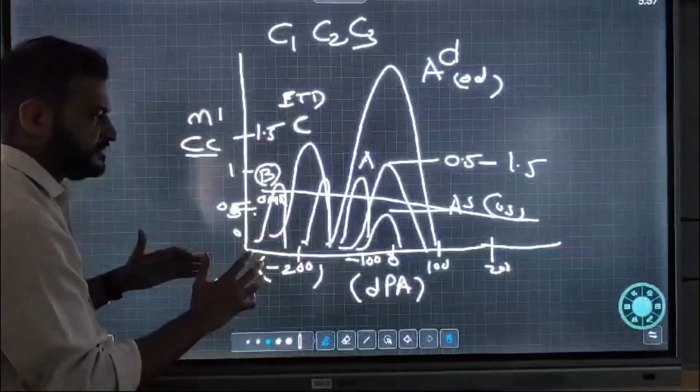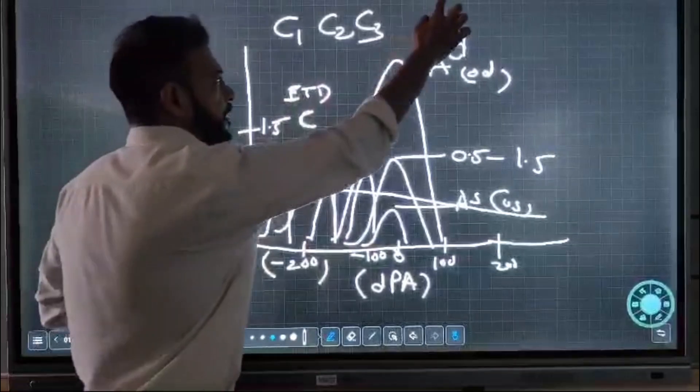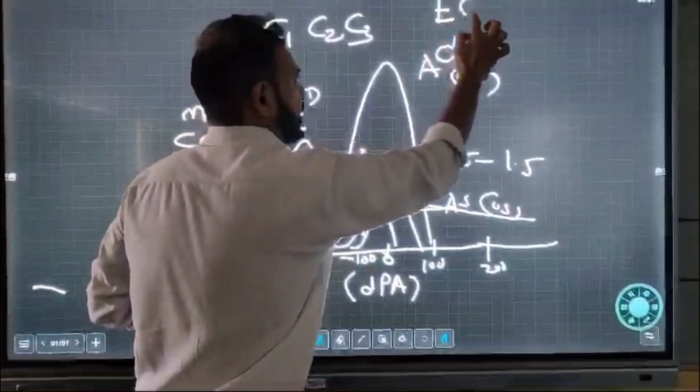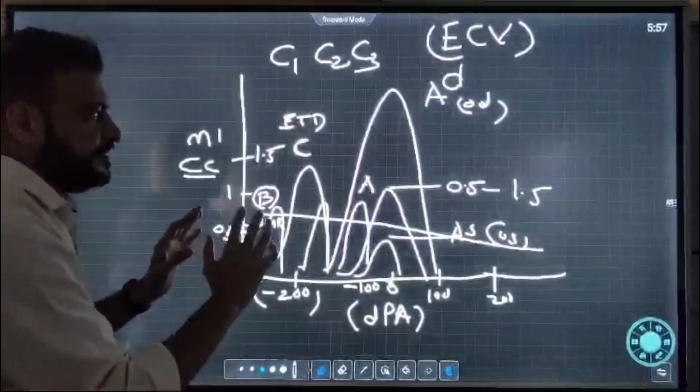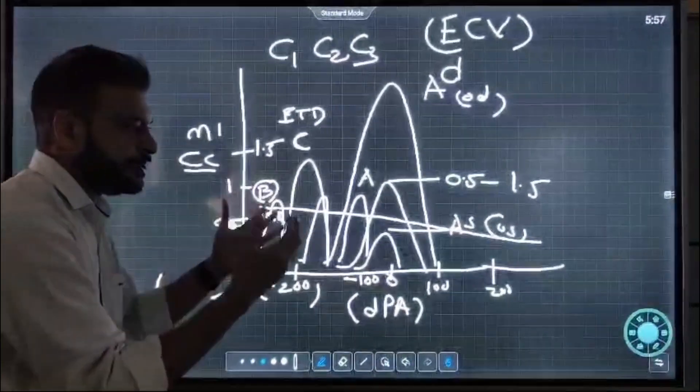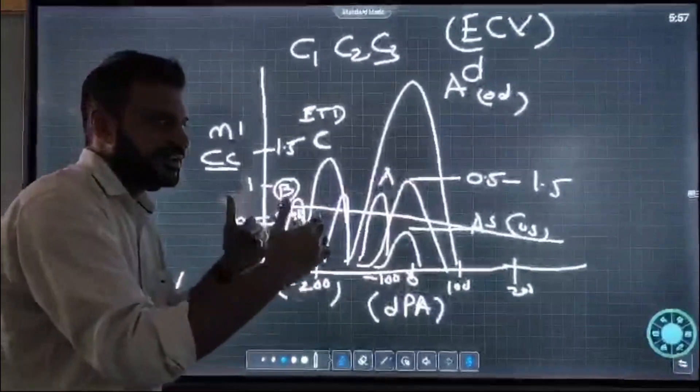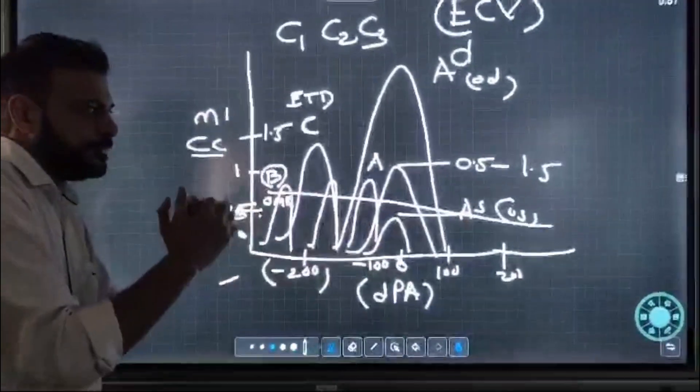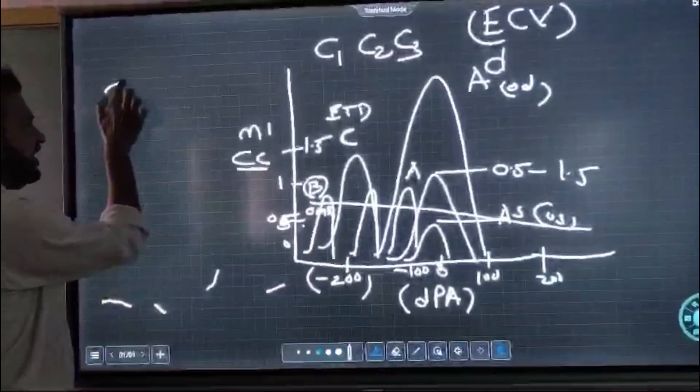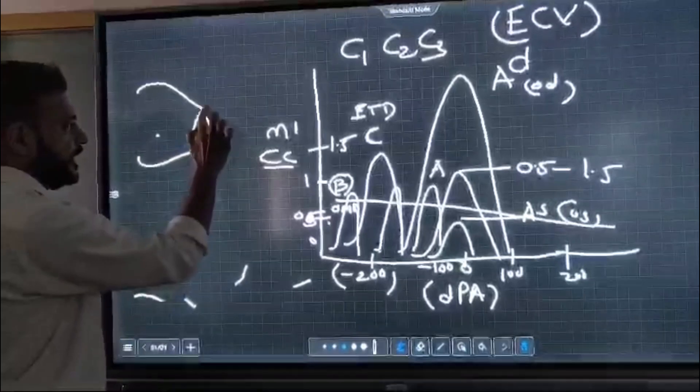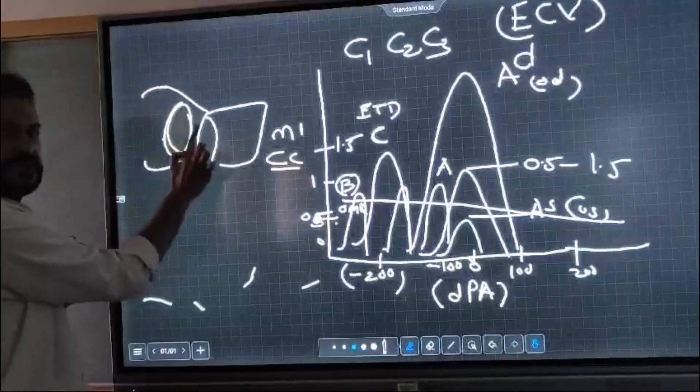The tympanogram gives us information about the compliance of the middle ear and also the external canal volume, which is important when doing tympanometry. In a perforated ear, the volume will be more. In cases of wax, polyp, or mass, the volume will be less.